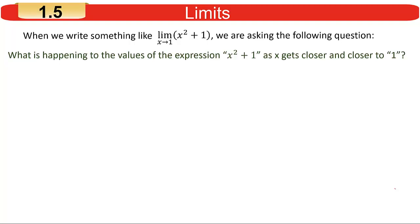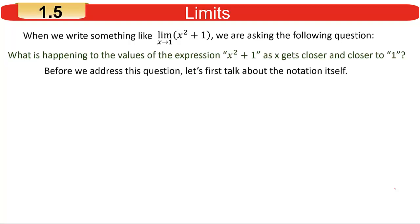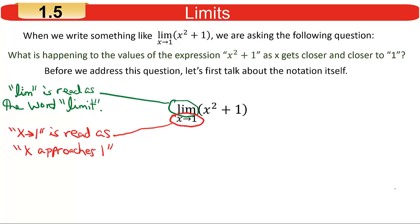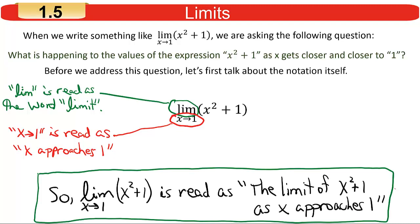Look at that notation and see how we get information out of that expression. The LIM is read as the word 'limit.' Underneath that, the x with the arrow pointing to the right toward the number 1 is read 'x approaches 1.' So that entire expression would be read as 'the limit of x squared plus 1 as x approaches 1.'